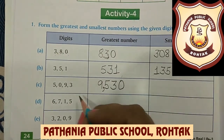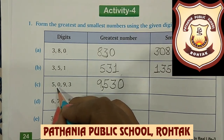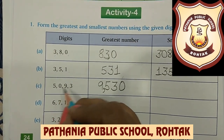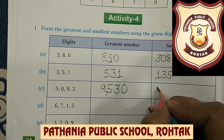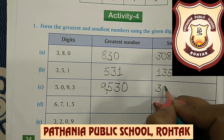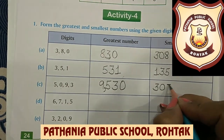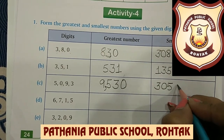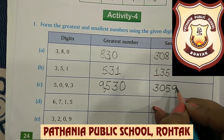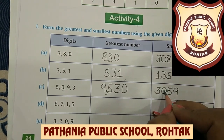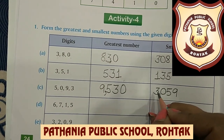Now we need to form the smallest number. The smallest digit is 0, but 0 doesn't have its own value, so we can't start our number with 0. The smallest digit after 0 is 3, so we write 3 first, then 0. After 3 and 0, the next smaller digit is 5, so we write 5. Then 9 is the greatest, so we write 9 last. The smallest number is 3,059. We place a comma to separate the two periods. So the number is 3,059.